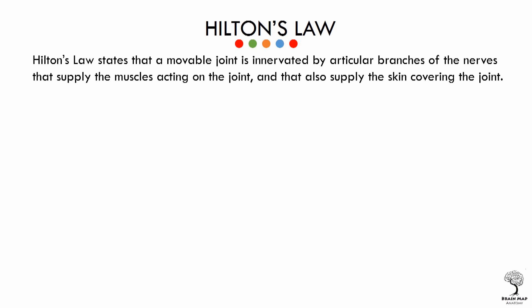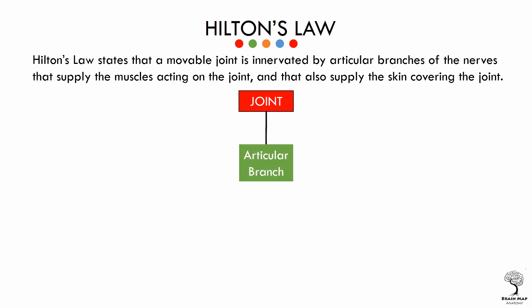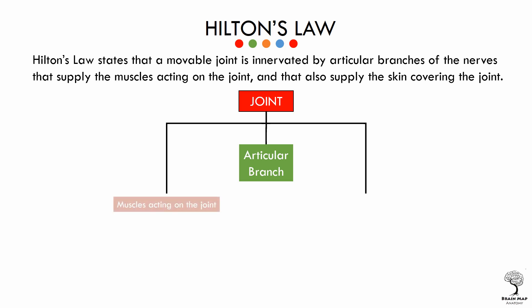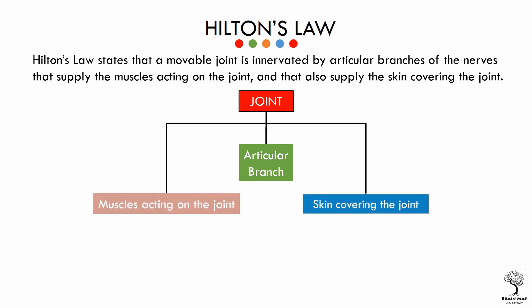In order to understand and remember Hilton's Law, we will make a brain map for it. The law states that a movable joint is innervated by articular branches of a nerve, and the same nerve will supply two other structures: the muscle acting on the joint, and the skin covering the joint.